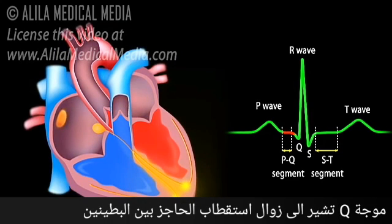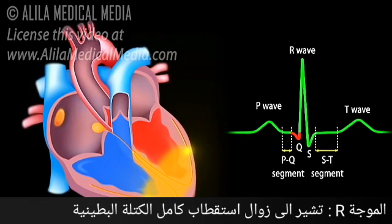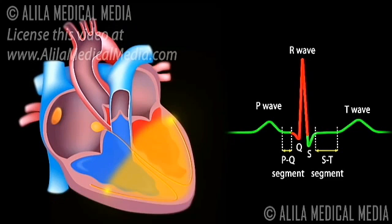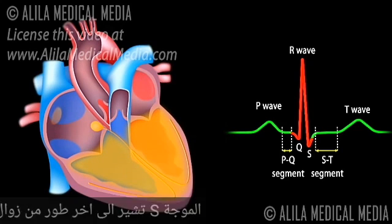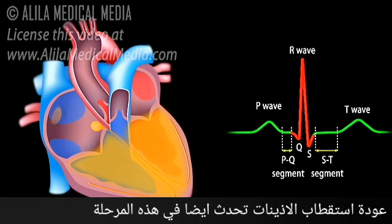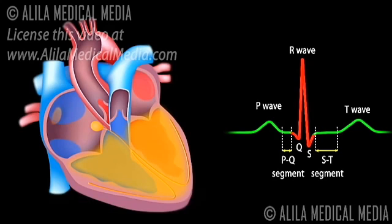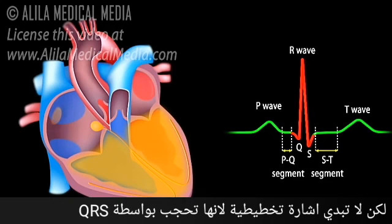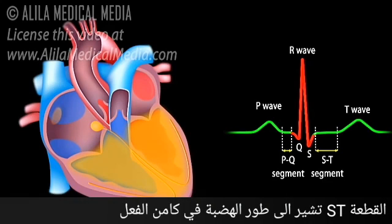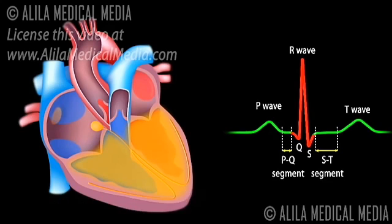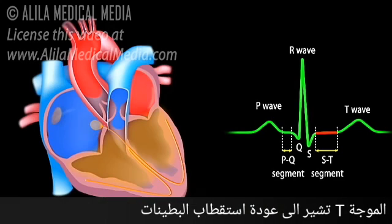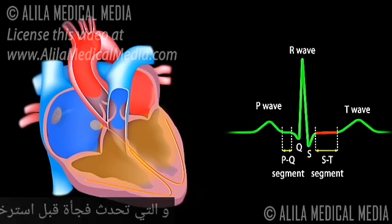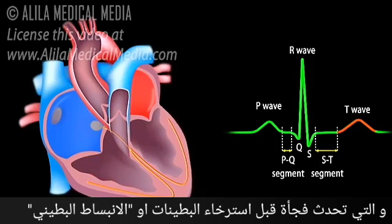The Q wave corresponds to depolarization of the interventricular septum. The R wave is produced by depolarization of the main mass of the ventricles. The S wave represents the last phase of ventricular depolarization at the base of the heart. Atrial repolarization also occurs during this time, but the signal is obscured by the large QRS complex. The ST segment reflects the plateau in the myocardial action potential — this is when the ventricles contract and pump blood. The T wave represents ventricular repolarization immediately before ventricular relaxation, or ventricular diastole.